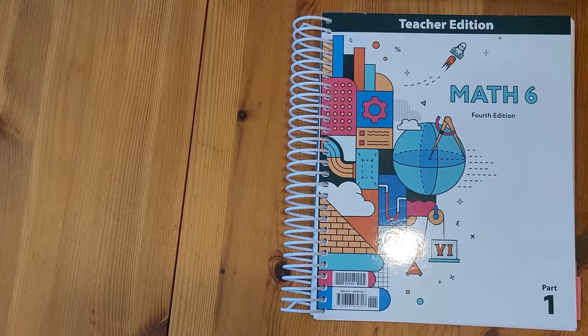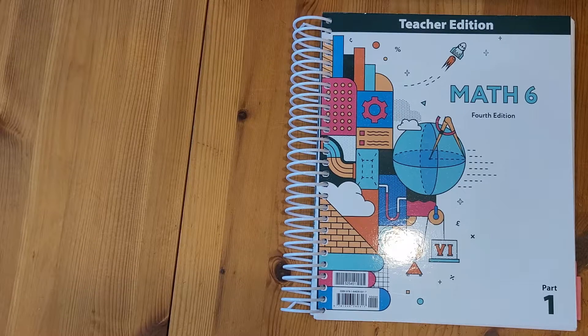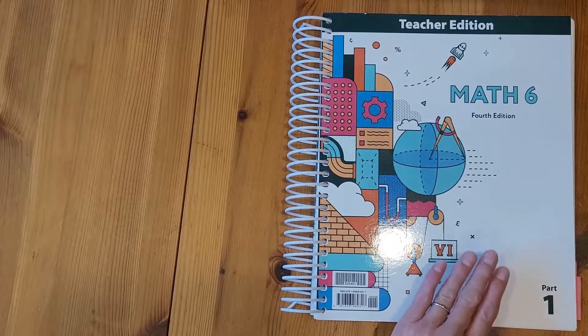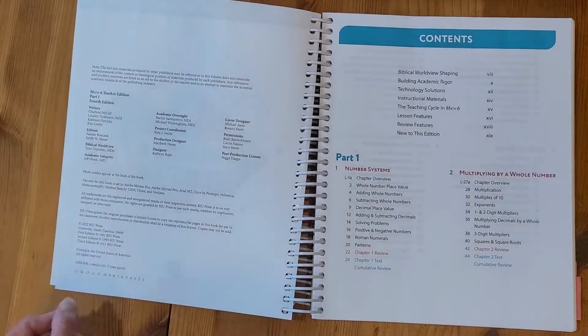This is the Math 6 teacher edition and this is the 4th edition book. So this teacher edition does have two parts. This is part one and let's go ahead and start by looking at the table of contents.